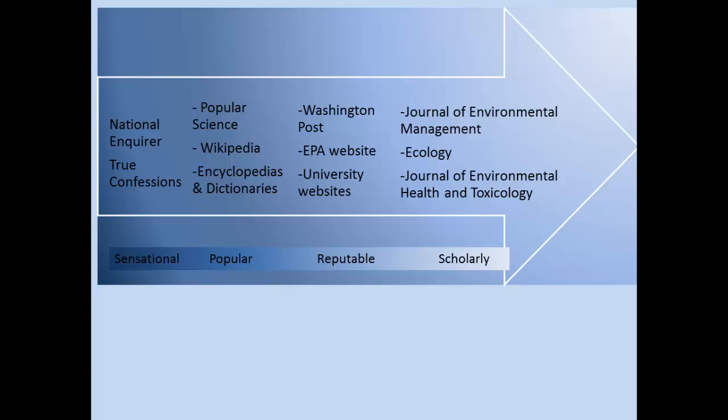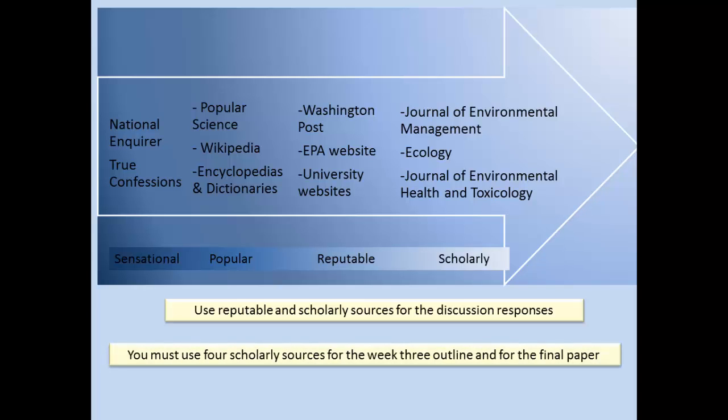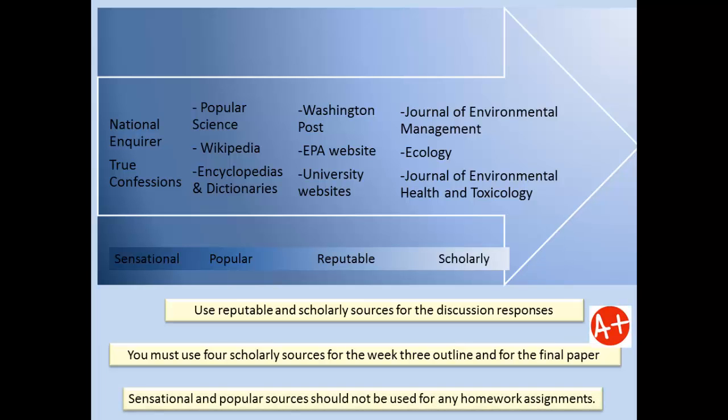Reputable sources include major newspapers and government and university websites. Some examples of scholarly sources include the Journal of Environmental Management, Ecology, and the Journal of Environmental Health and Toxicology. For discussion responses in Science 207, you should be able to use reputable and scholarly sources. For the Week 3 outline and for the final paper, you must only use scholarly sources in order to earn a good grade. Sensational and popular sources should not be used for any homework assignments.